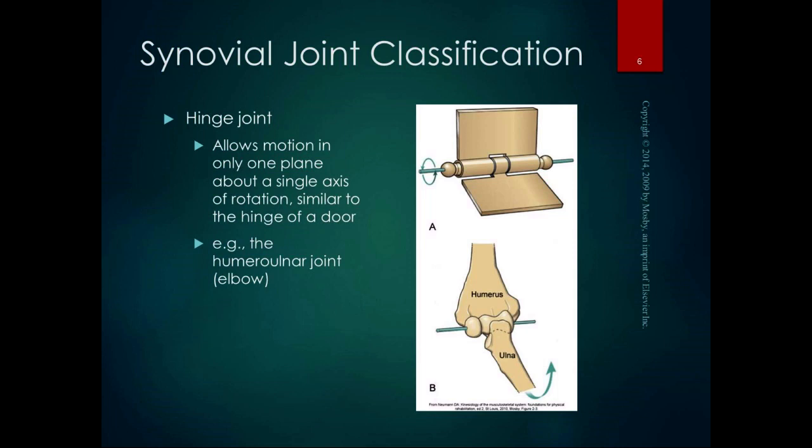The first synovial joint classification is a hinge joint. A hinge joint has one degree of freedom — it allows motion in only one plane about a single axis of rotation. It's called a hinge joint because it is similar to the hinge of a door. The humeral-ulnar joint, also known as the elbow joint, is the classic hinge: one degree of freedom, one plane of motion.